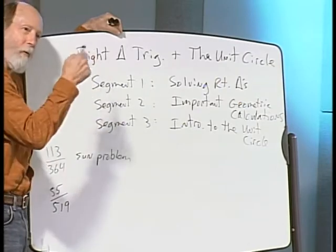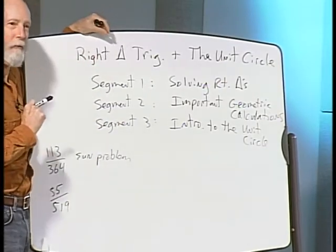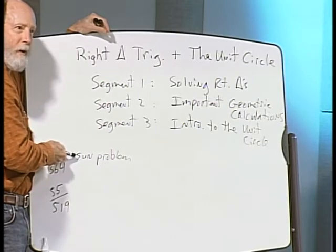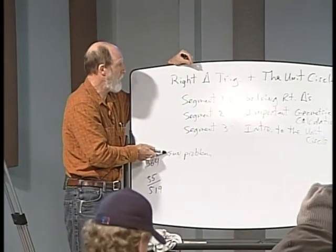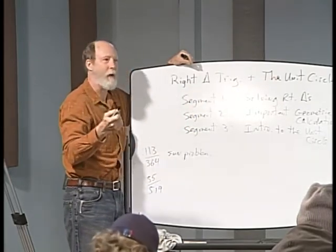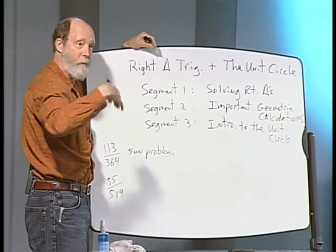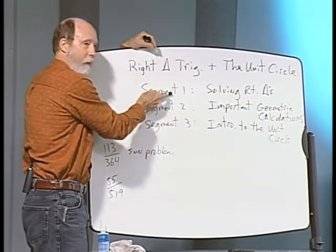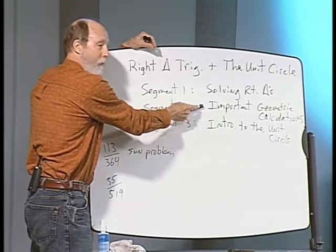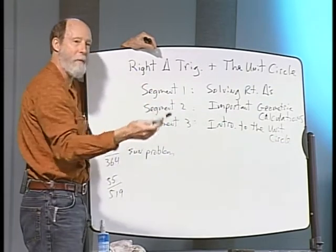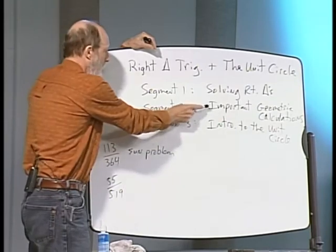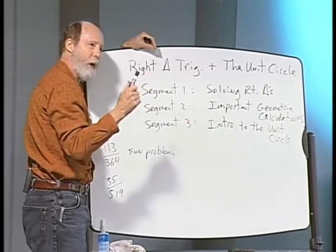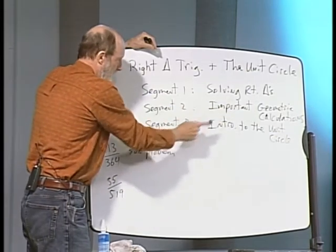Today we're picking up the right triangle discussion with important trig ratios. I'll also jump back to a circular motion problem from the textbook to begin with, then go back to sine and cosine stuff to become comfortable with that and solve some right triangles. In segment two we'll do Pythagorean theorem calculations to commit to memory, and in segment three we'll introduce the unit circle as a memory aid for trig problems.